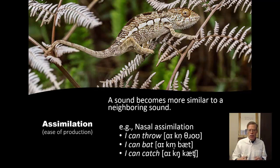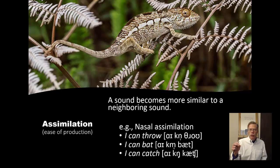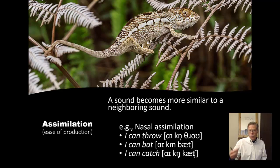One example in English is called nasal assimilation, where we start with an N, which is a voiced alveolar nasal. But that N sound, when it precedes stops, will take on the place of articulation of whatever stop follows it. For example, 'I can throw' — you get an N, the alveolar, because that's the default. But if the word that immediately follows starts with a bilabial, like 'bat', then you end up with an M instead: 'I can bat', 'I can bat'.